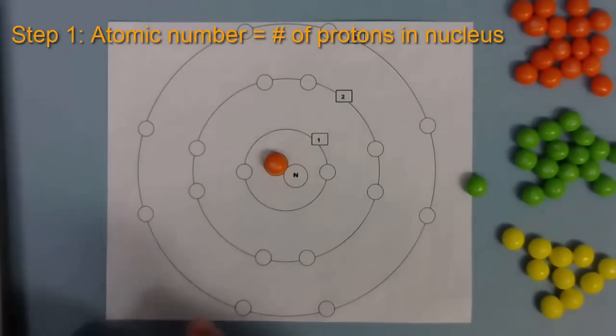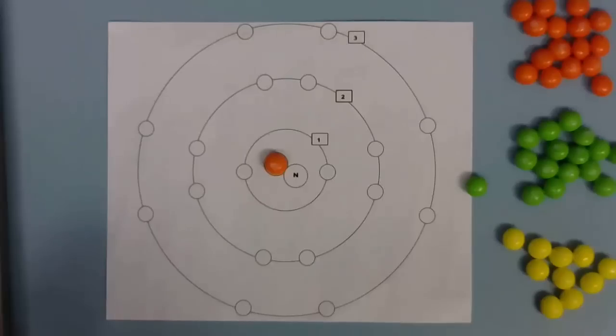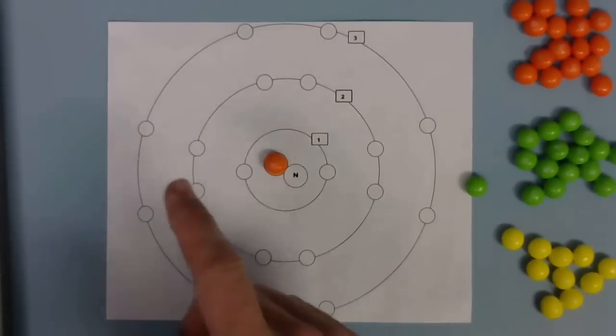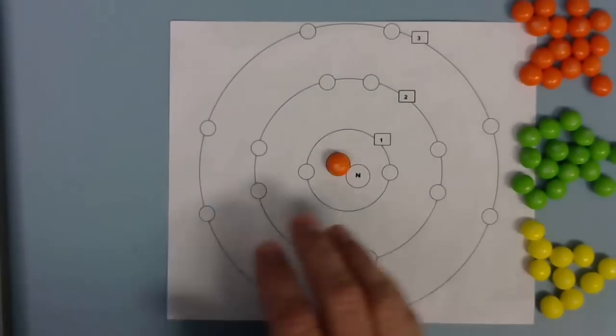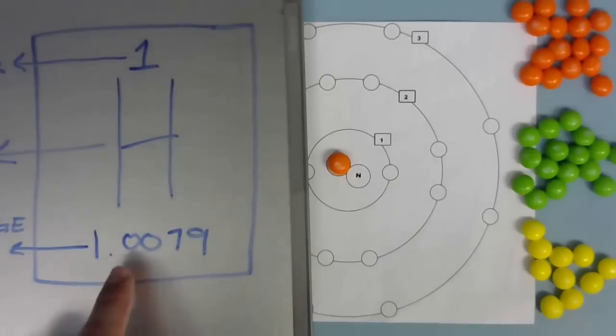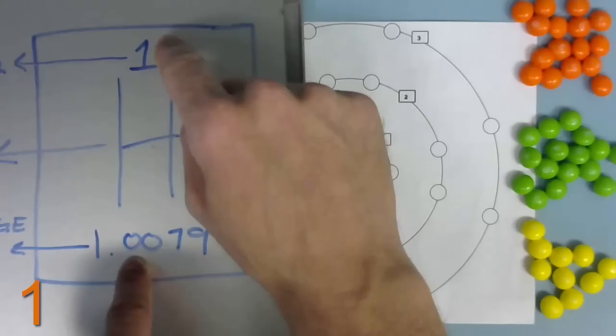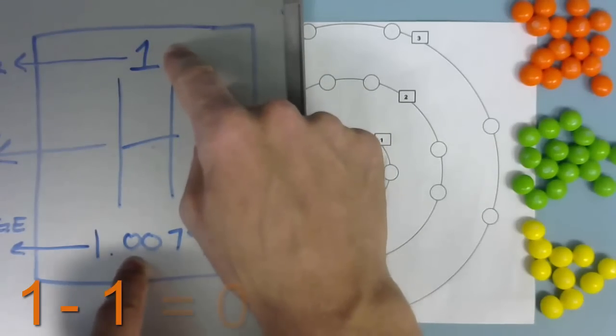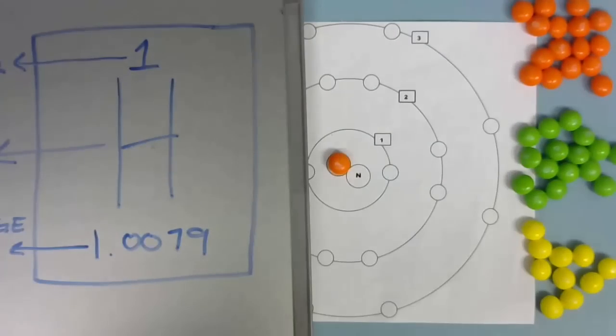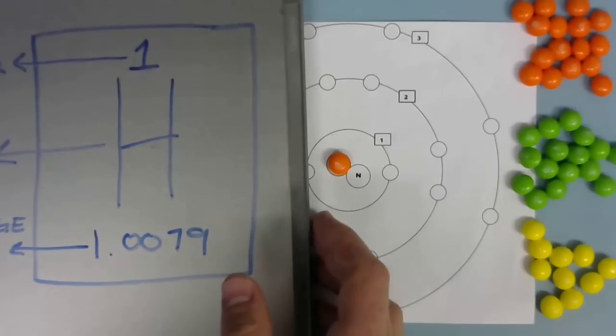To determine the number of neutrons, all you have to do is take the atomic mass and subtract the number of protons. We have an atomic mass of 1. You subtract the atomic number, or the number of protons, and that equals 0. So that means we don't have any neutrons.